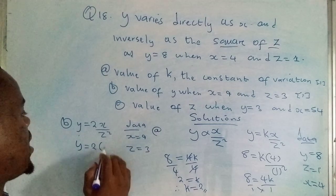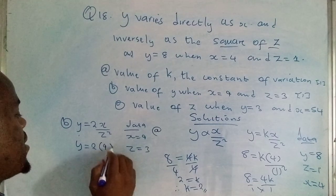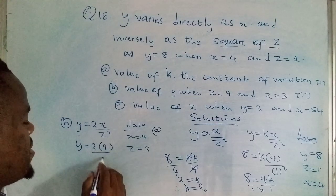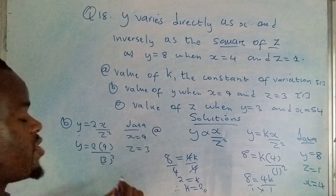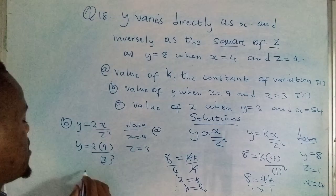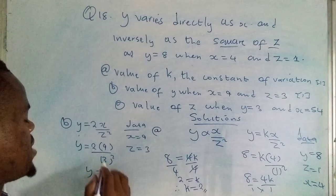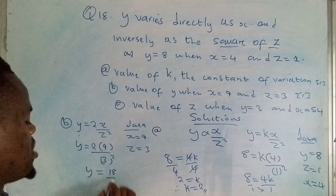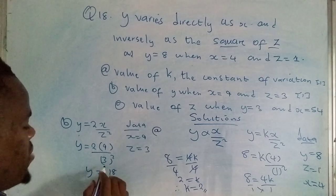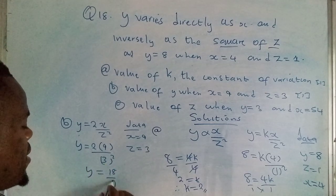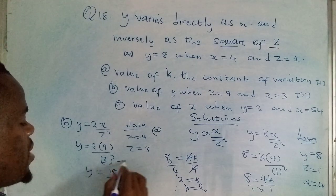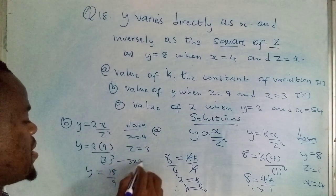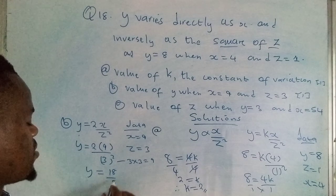We simply plug in the values of these variables into that equation. That would be y is equal to 2, x is actually 9, then z is 3 which should be squared. That would be y is equal to 2 times 9, that is 18. 3 squared, that's 9. 9 into 18, that's 2. So y is equal to 2.